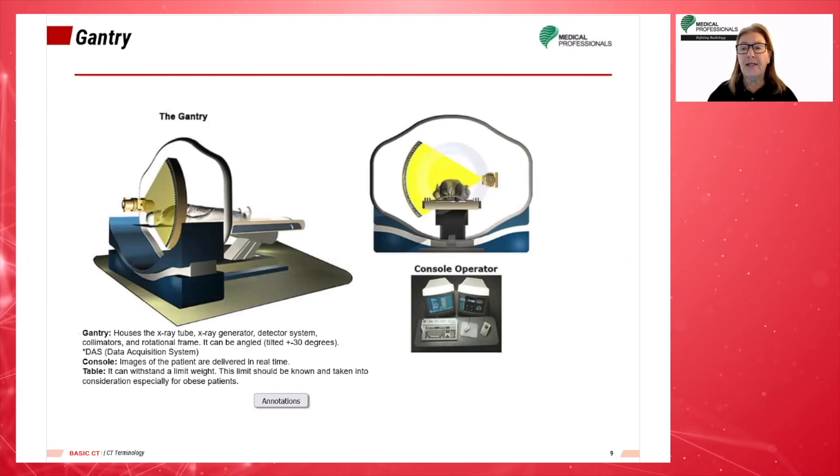The gantry is a mounted framework that surrounds the patient. The gantry houses the x-ray tube, the x-ray generator, the detector systems, collimators, and the rotational frame, all of which are considered the imaging components. Two important features of the gantry are the gantry tilting range and the gantry aperture. The gantry can be tilted plus or minus 30 degrees. Most scanners have a 70 cm aperture. The table slides into and out of the gantry during a CT examination.